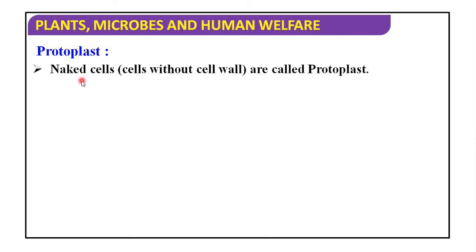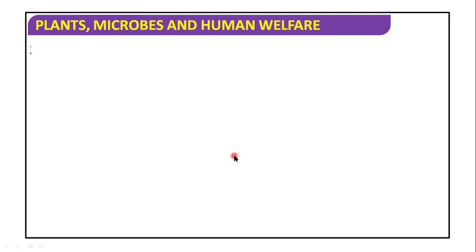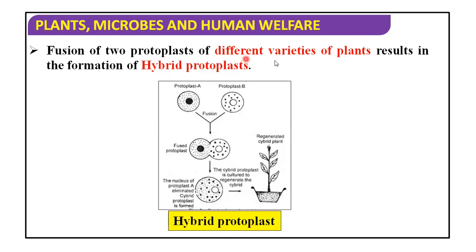What is a protoplast? Naked cells — cells without a cell wall are called protoplasts. This is the picture of a protoplast. Fusion of two protoplasts of different varieties of plants results in the formation of a hybrid protoplast. Suppose protoplast A of one plant and protoplast B of another plant are fused — their cytoplasm fuses. The nucleus of protoplast A is eliminated, and a cybrid protoplast is formed.